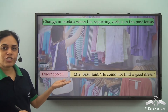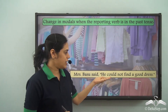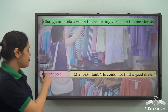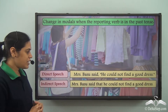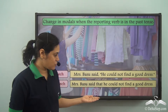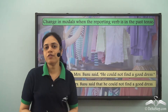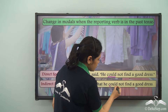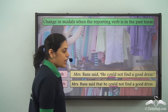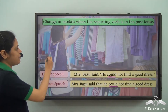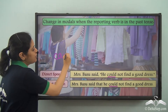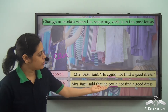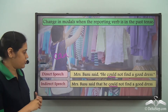'Mrs. Vasu said he could not find a good dress.' In indirect speech: 'Mrs. Vasu said that he could not find a good dress.' So 'could' is the modal and it remains the same. To summarize: 'can' changes to 'could', and 'could' also remains 'could'.